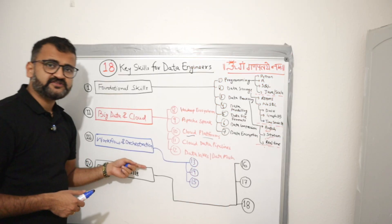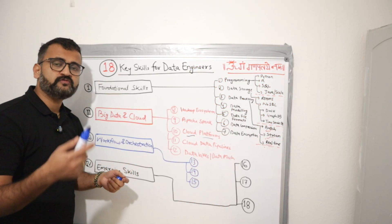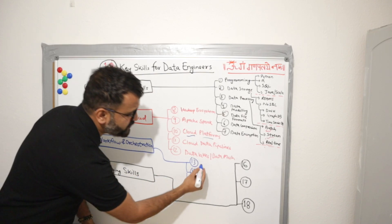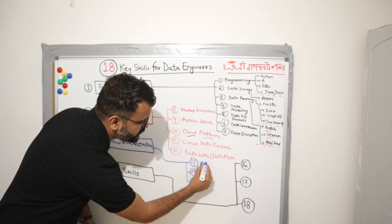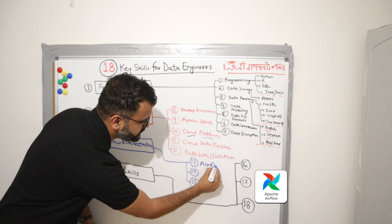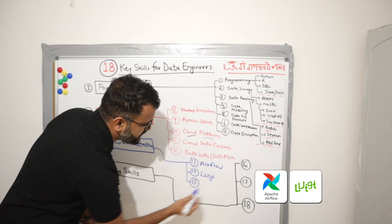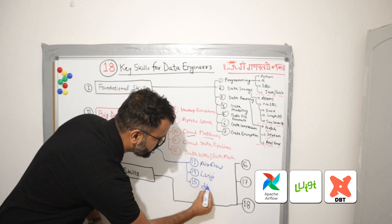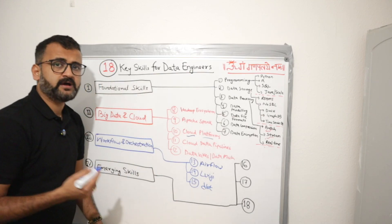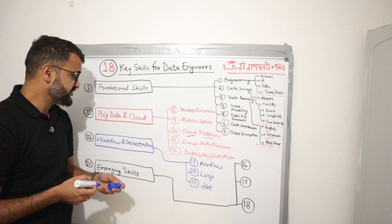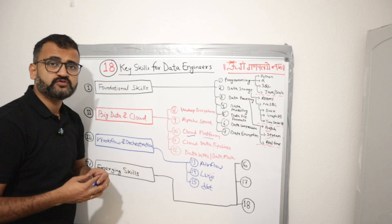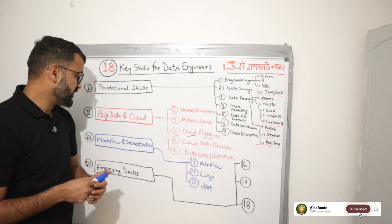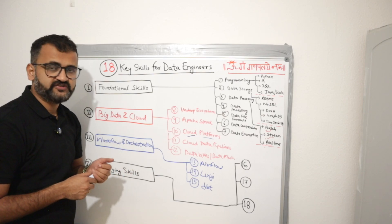When it comes to workflow and orchestration, which basically means that how you will manage your workflows and how you will orchestrate your data pipelines, then a very important tool which comes into my mind is Apache Airflow. Another one is Luigi, which is very good for monitoring and orchestrating your workflows, and then DBT. So DBT is very good for handling your data transformations and it also helps you monitor your data workflows. So these three tools could be very important when it comes to your workflow and orchestration.